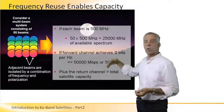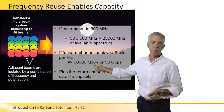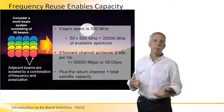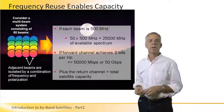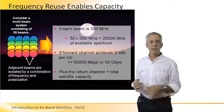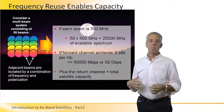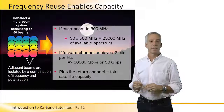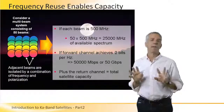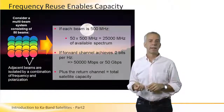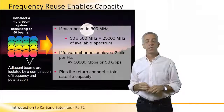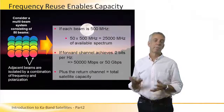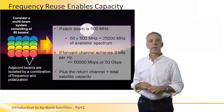That 50 Gbps is only on the forward channel. The return channel is probably going to be about the same, maybe a little less. So you've got about 100 Gbps total with such a satellite — significantly more capacity than we see with a conventional satellite optimized for broadcast TV.